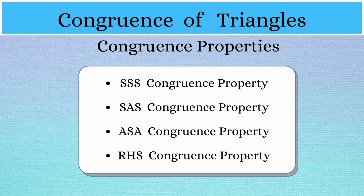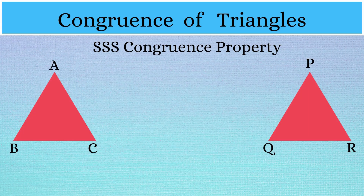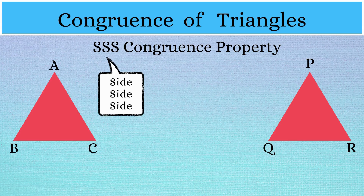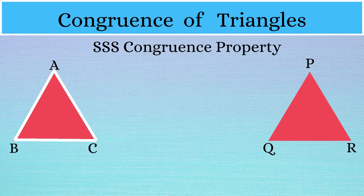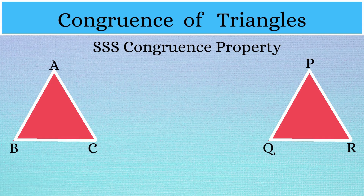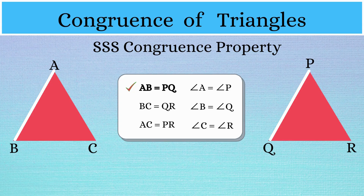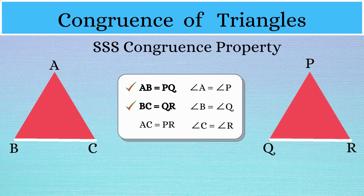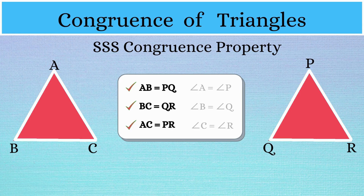The first property is the SSS congruence property. SSS stands for side, side, and side, which means the length of the three sides of one triangle is exactly equal to the length of the sides of the other triangle. So in our example, if AB is equal to PQ, BC is equal to QR, and AC is equal to PR, we don't have to worry about the angles.